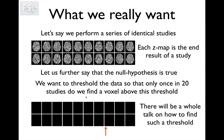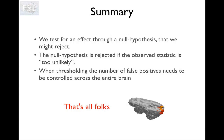To summarize: we test for an effect through a null hypothesis that we might reject. The null hypothesis is rejected if the observed statistic is too unlikely, and we use the null distribution as our tool for assessing what is too unlikely. When thresholding statistical images we need to control the number of false positives at an experiment level, i.e. across the entire brain. And that's all for this talk — thank you very much.